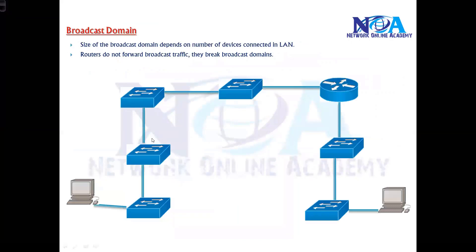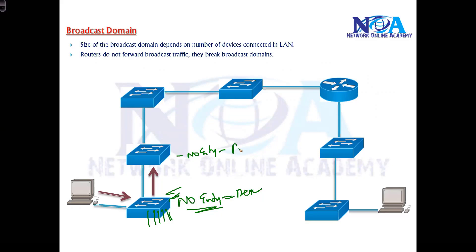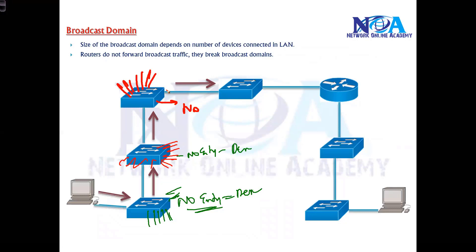Taking the same example further: a computer sends a request to a switch, which has no destination MAC entry, so it broadcasts out of all interfaces and forwards to the next switch. That switch does the same — no entry, so it broadcasts out of all interfaces, including the interface connecting to the next switch. This continues through each switch, broadcasting out of every interface including those connecting to computers and routers.